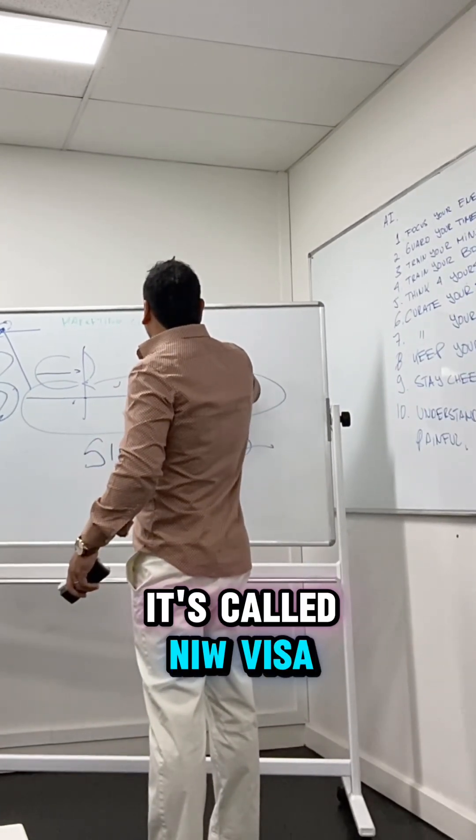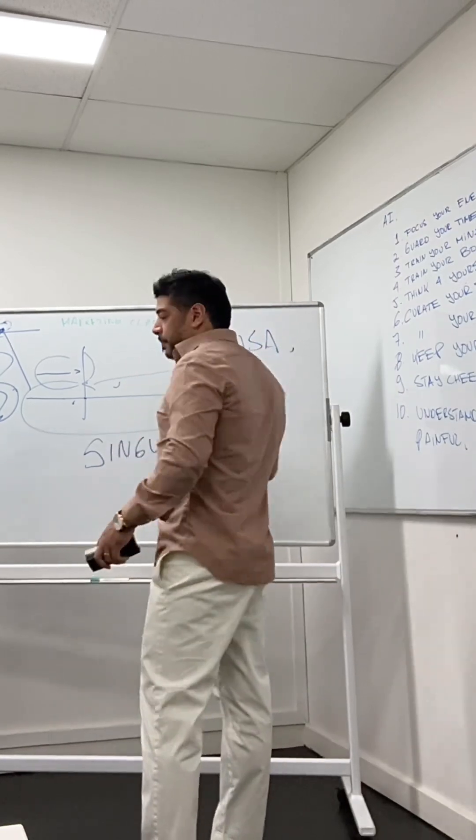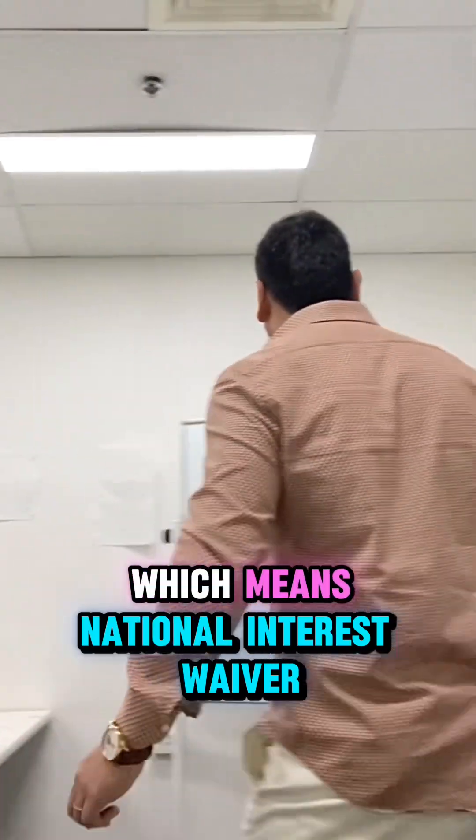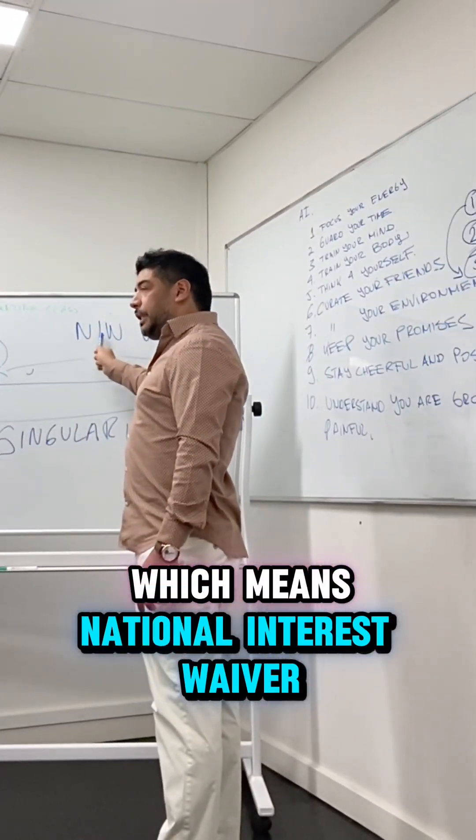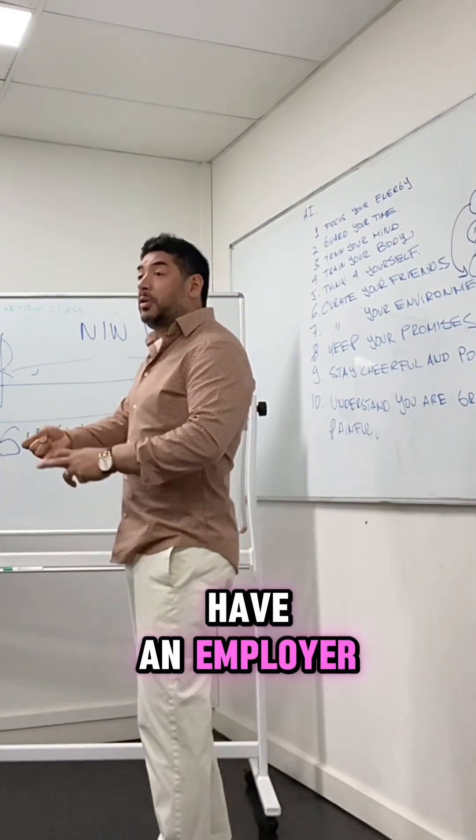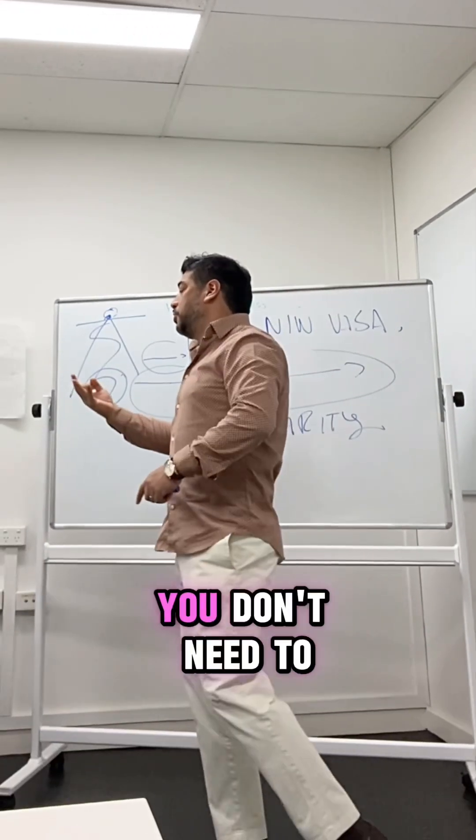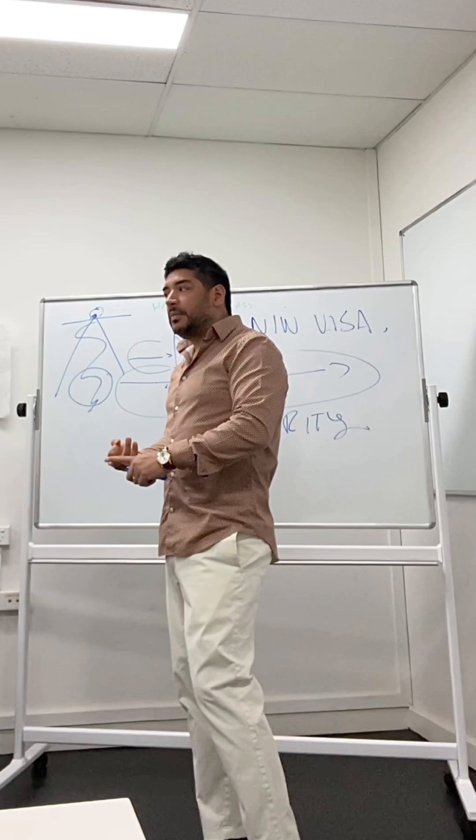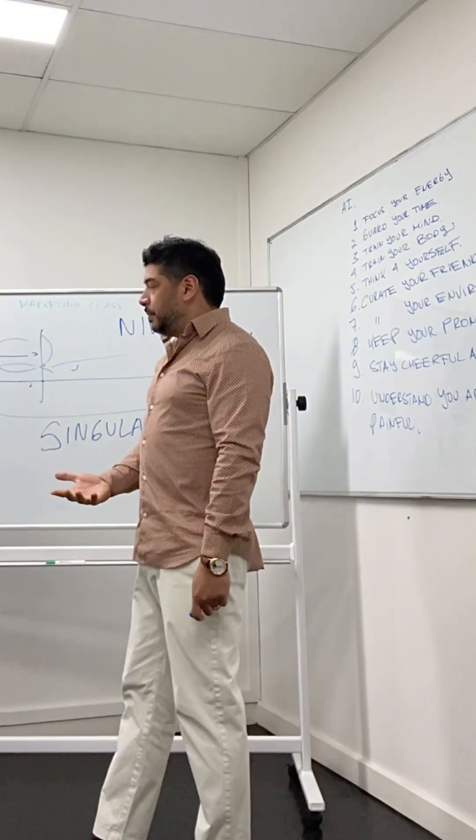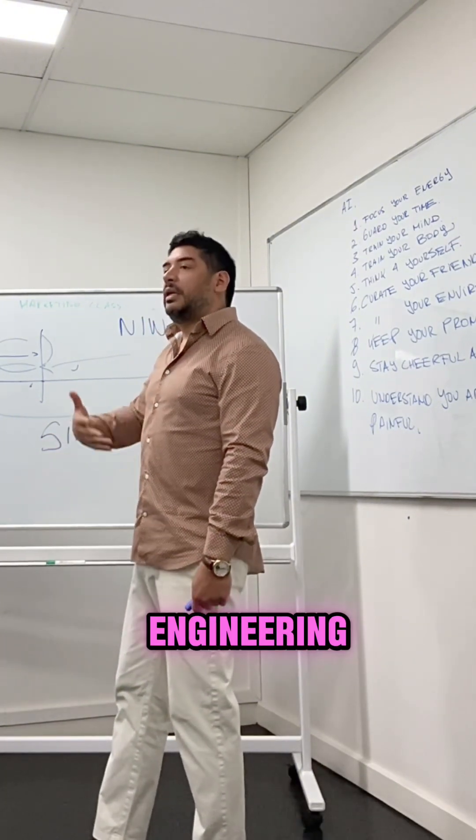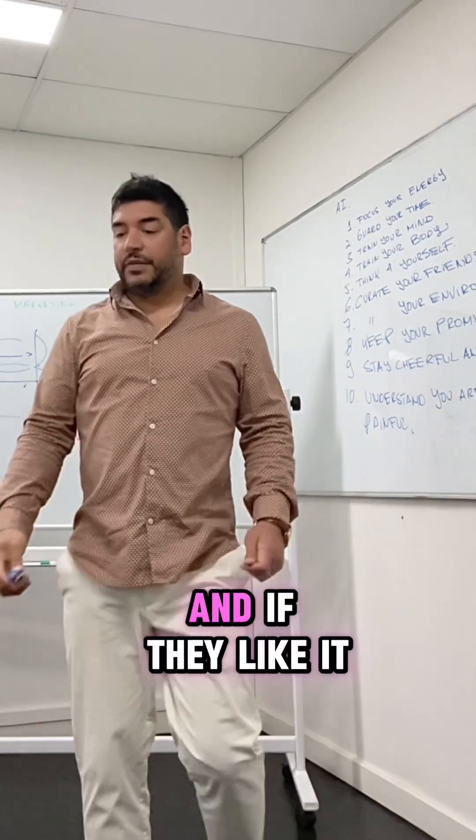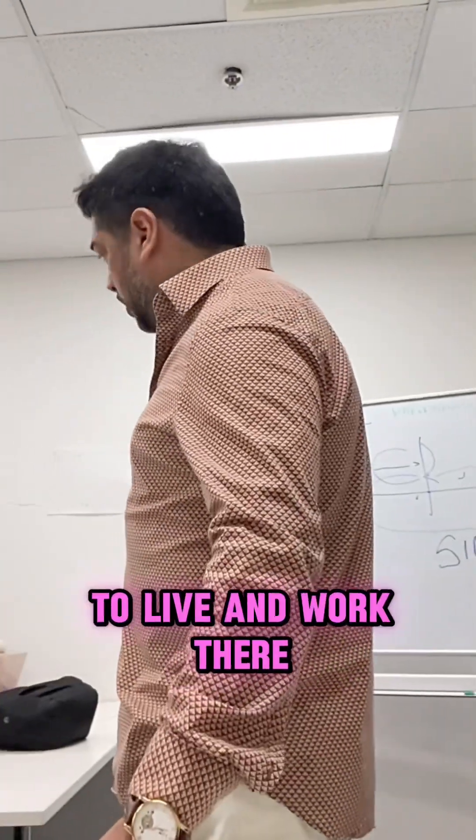It's called NIW visa - National Interest Waiver. Waiver means that you don't need to have an employer, you don't need to have an investment, you don't need to have an invitation from anyone. You independently, because of the work that you do, the research that you do in new technologies, engineering, artificial intelligence, and STEM areas, you have a case to present to the States, and if they like it, guess what will happen? You will be invited to live in the United States.